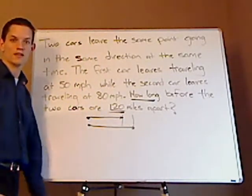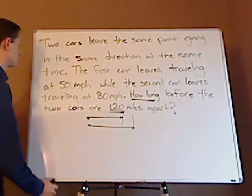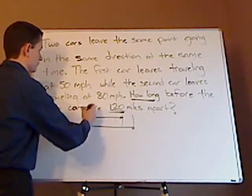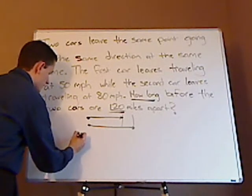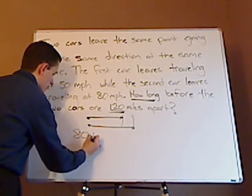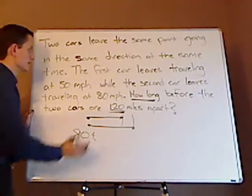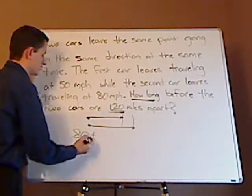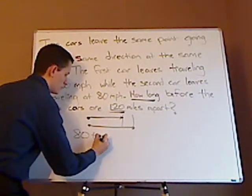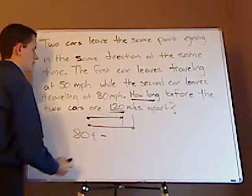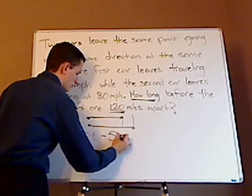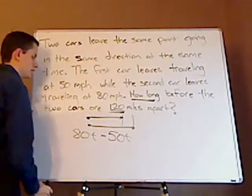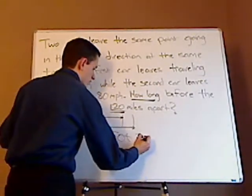So you're actually looking for a difference. You're looking for the difference of the faster one. The faster one has a rate of 80 miles per hour times t, which is time, and the time is the same for both cars, minus the slower car which is 50 miles per hour times t, miles apart, which is 120.